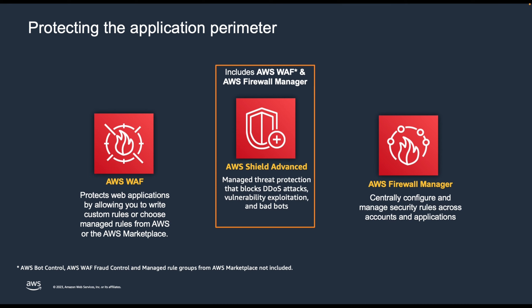Shield Advanced is a managed DDoS protection service. It provides protection from Layer 3 to Layer 7, and it leverages AWS WAF to protect our applications against Layer 7 DDoS attacks. Firewall Manager allows you to centrally manage security policies and helps push out Shield Advanced policies for the resources that need to be protected.